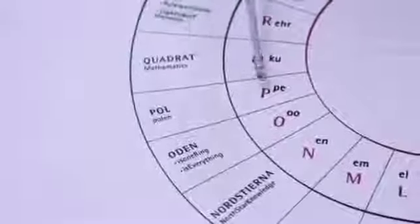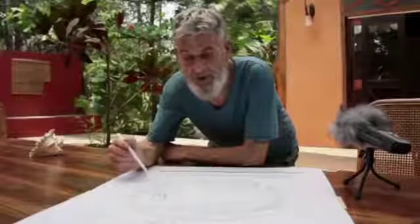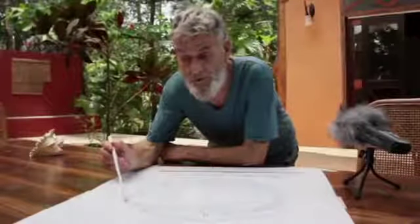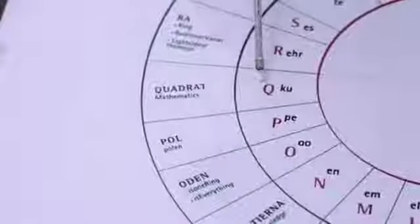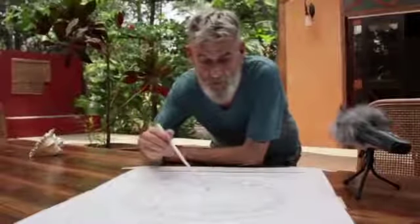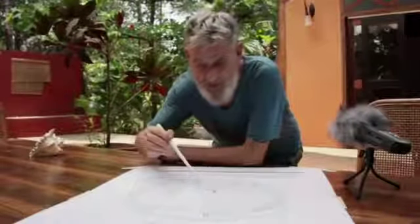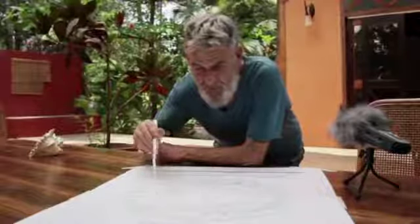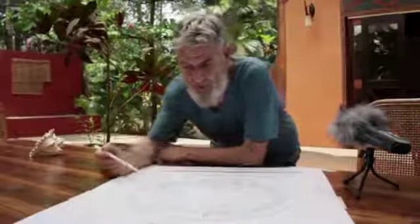The next sound is Pe — P and A — meaning pole. In English we say P, here they say Pe, and Pe means a pole. The next sound is Ku — Ko and U — in English we say Q. Ku is quadrat, Ku is mathematics. It's a ring with a pole coming from the middle, and when the sun casts the shadow, it makes the form of a Ku.